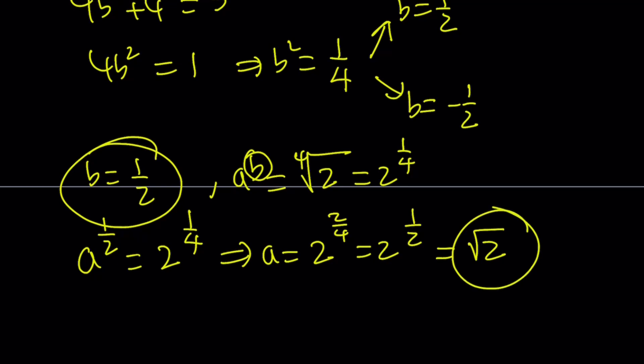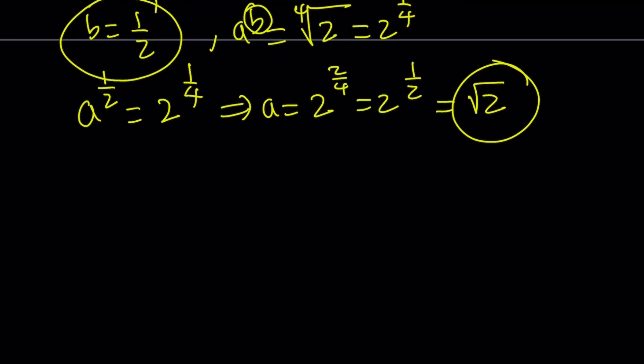Okay. We're going to write it as an ordered pair at the end, so don't worry about it. If b is equal to negative 1 half, then from here, we're going to get a to the power b, which is negative 1 half, equals 2 to the power 1 fourth. Just like before, the only difference is the exponent. We make it negative.